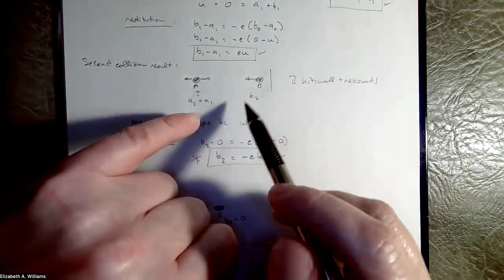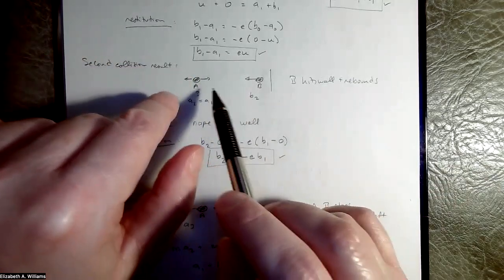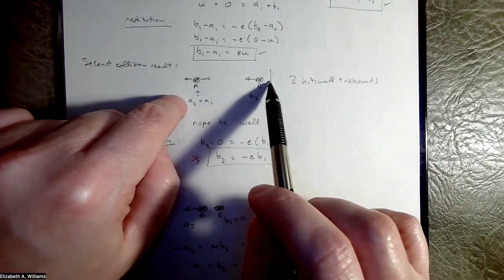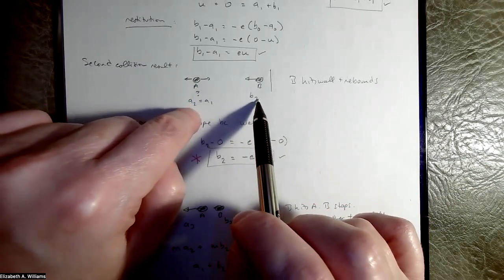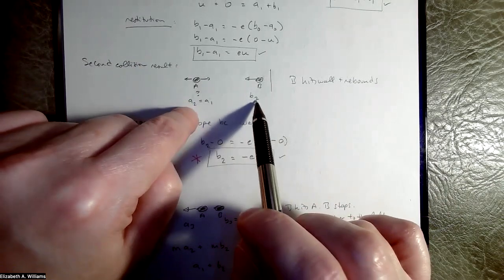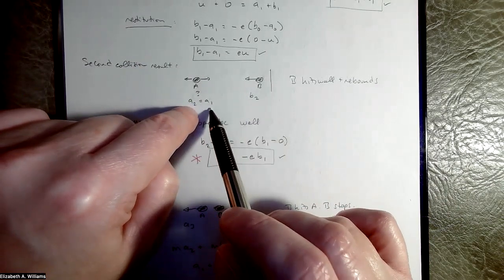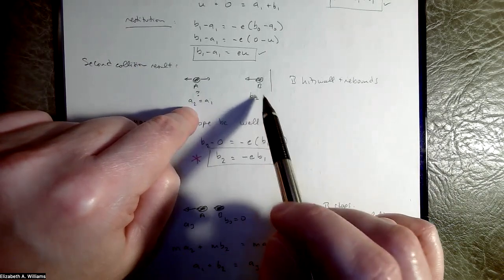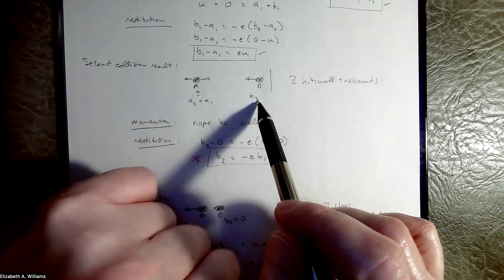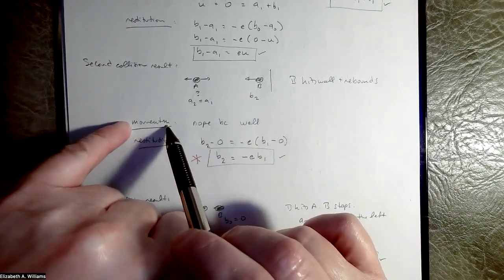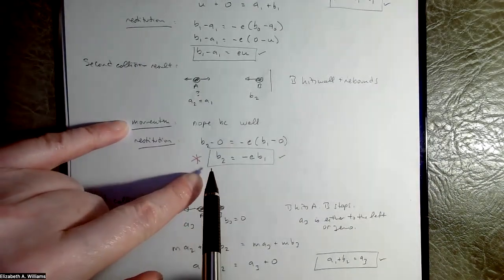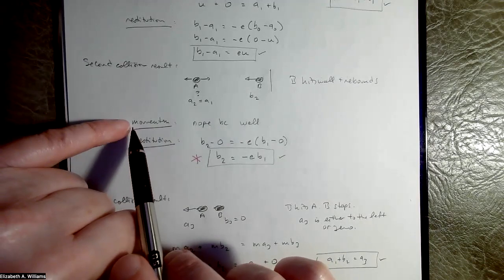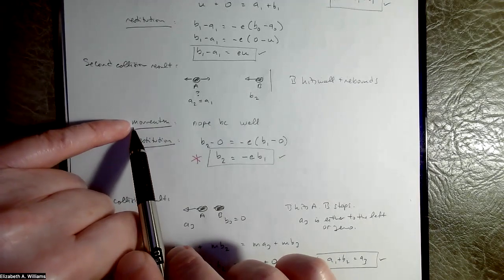Okay, in the second collision. So b was stationary, a smacked into it, a is still moving, I don't know which way I don't really care. B smacks into the wall and comes back to the left. Okay, so these are the velocities after the second collision, a two and b two. Well, a two is the same as a one because nothing happened in this part of the story to a. And I don't know what b two is. I know it's a negative number but I'm just going to let it absorb its negative.